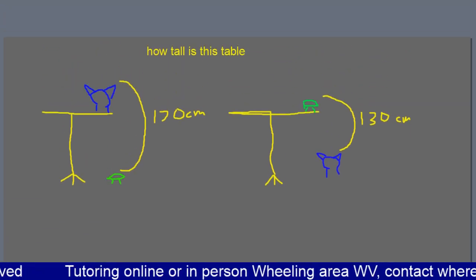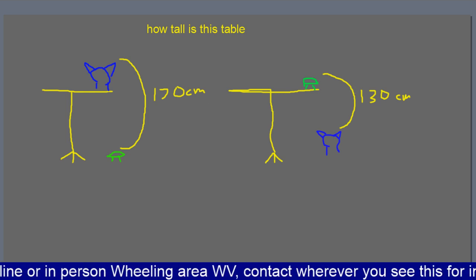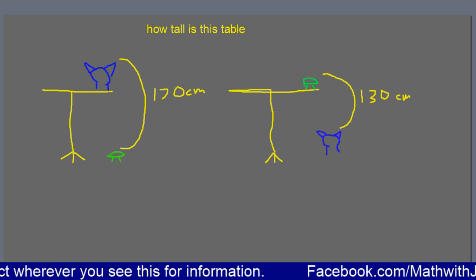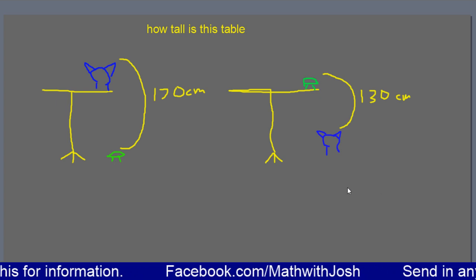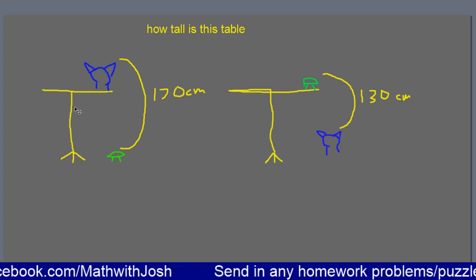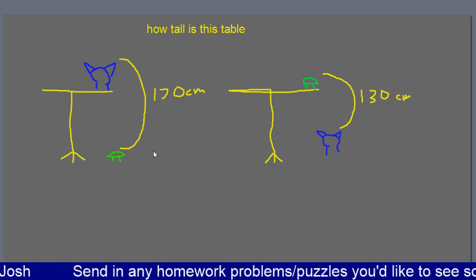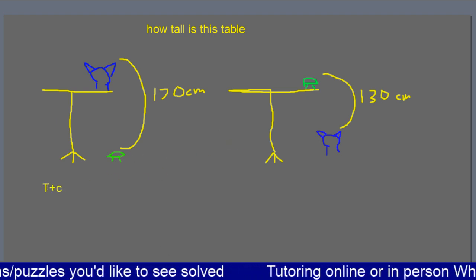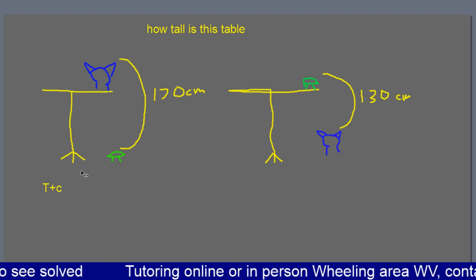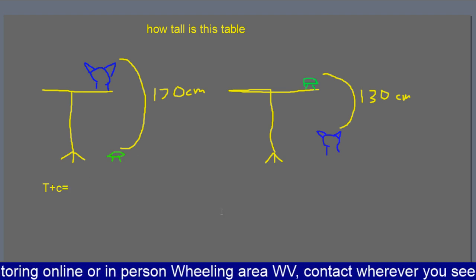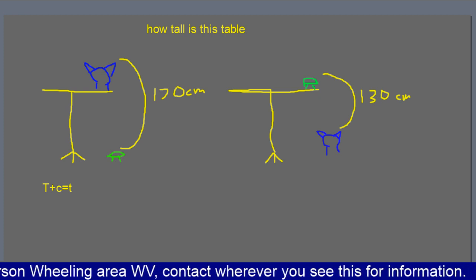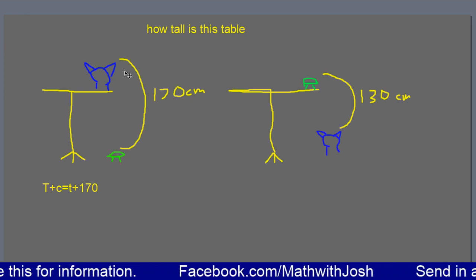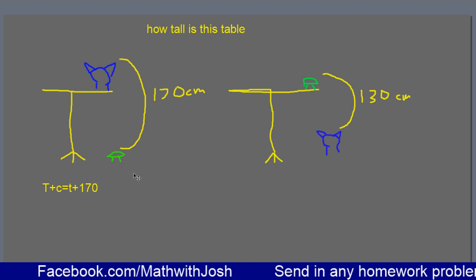So what I'm going to use, by the way, this is a bad design problem in that table and turtle both start with the same letter. So that's slightly inconvenient. So the way I view this problem is that we have the height, which is the table's height plus the cat sitting on top of it. I'm going to use capital T for the table. So we have the table height plus the cat's height is equal to the turtle's height, I'm going to use a lowercase T, plus 170. Because we see that the turtle plus 170 up gets us to the same place as the table with the cat sitting on top of it.